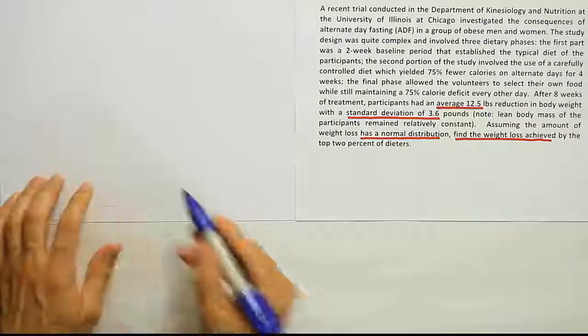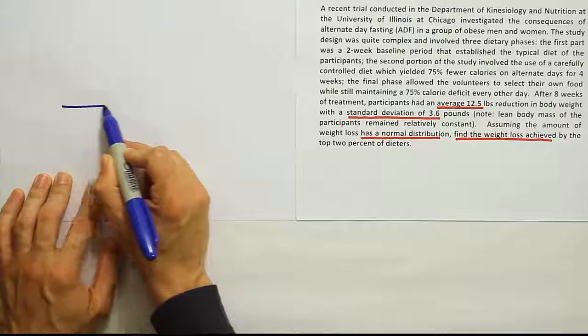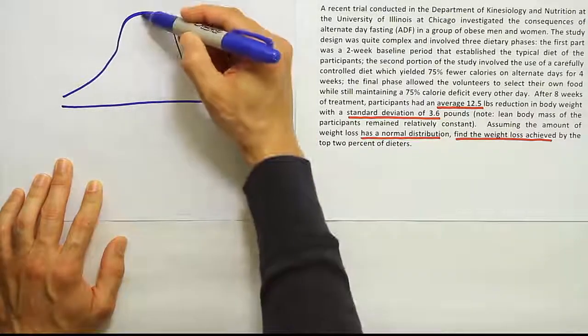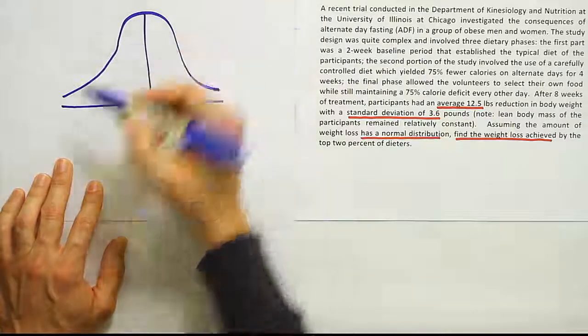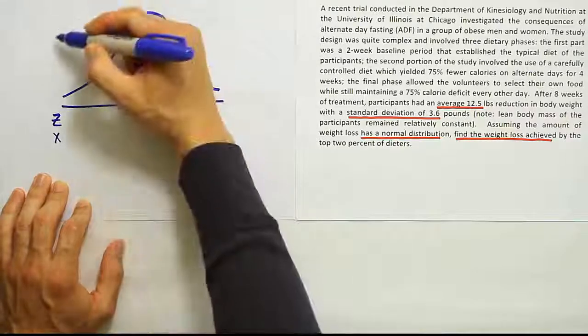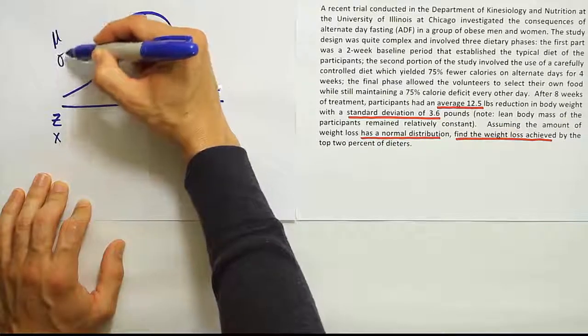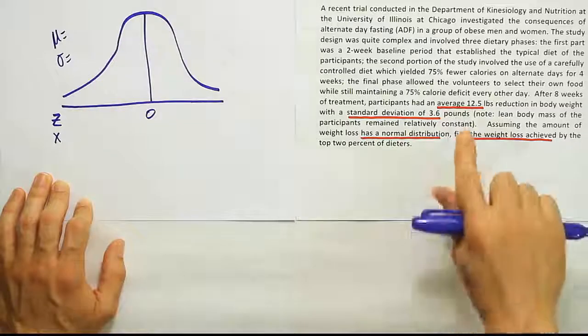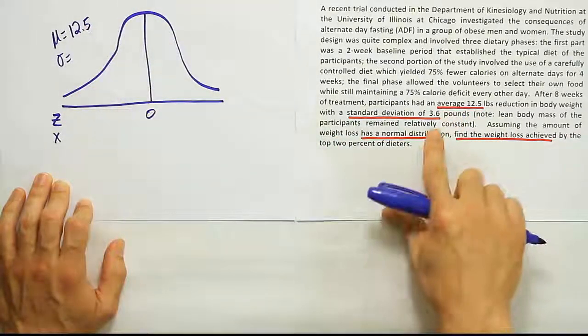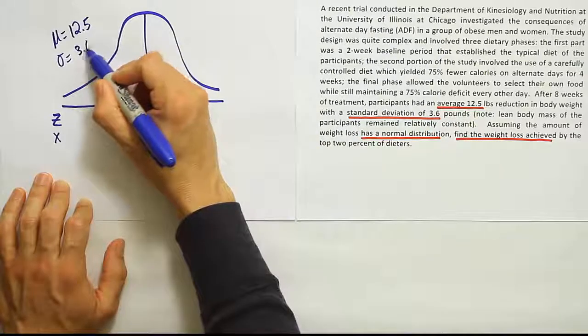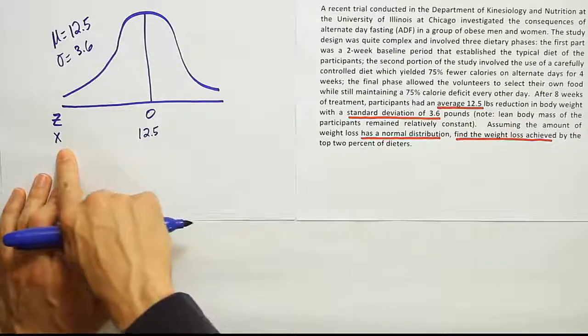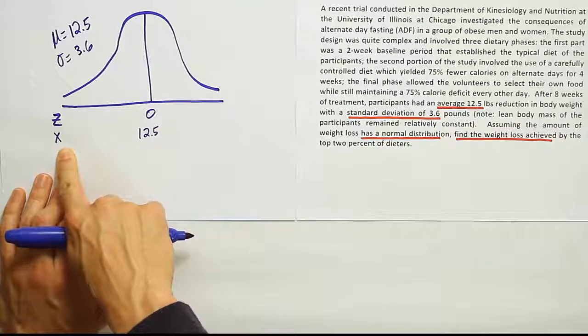So there's my bell curve. Should always label my z-axis and x-axis. Z is centered at zero. We're going to label the mean and the standard deviation for the data that we're dealing with. The mean is 12.5. The standard deviation is given as 3.6. So the mean here on the x-axis will be 12.5. Here this x is going to represent the amount of weight loss achieved by the dieter.